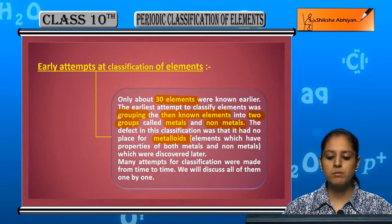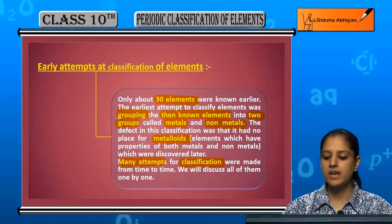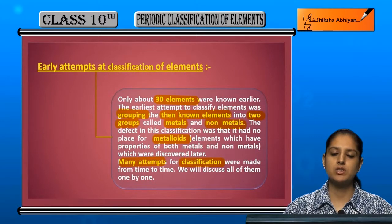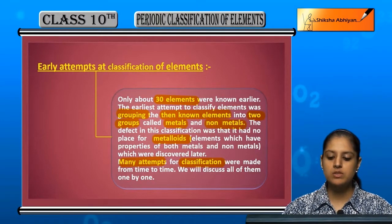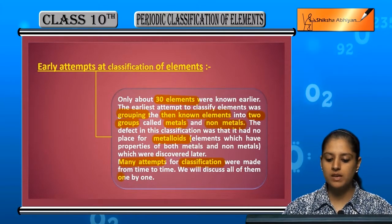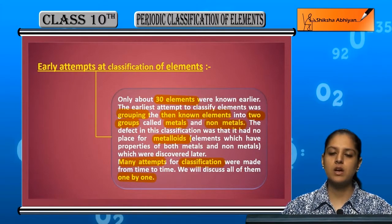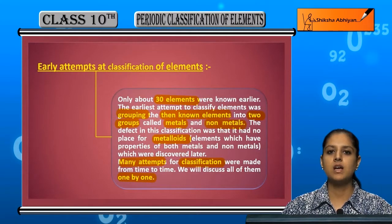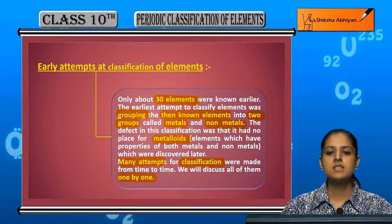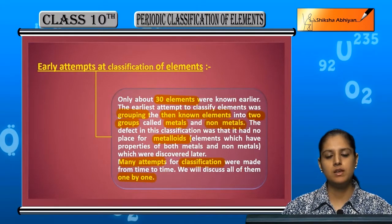There were many more attempts to classify the elements because, after that, many more elements were discovered. As more elements were discovered, the previous classifications showed further limitations. We will now discuss those subsequent attempts — what was the basis of each classification, what were its limitations, and how were those limitations overcome — starting with the first type of classification.